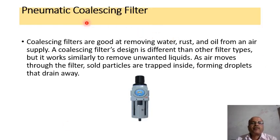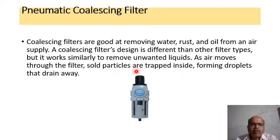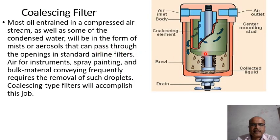Pneumatic coalescing filters are good at removing water, rust, and oil from an air supply. Coalescing filter design is different from other filter types but works similarly to remove unwanted liquids. As air moves through the filter, solid particles are trapped inside, forming droplets that drain away. This is the diagrammatic representation of a coalescing filter.